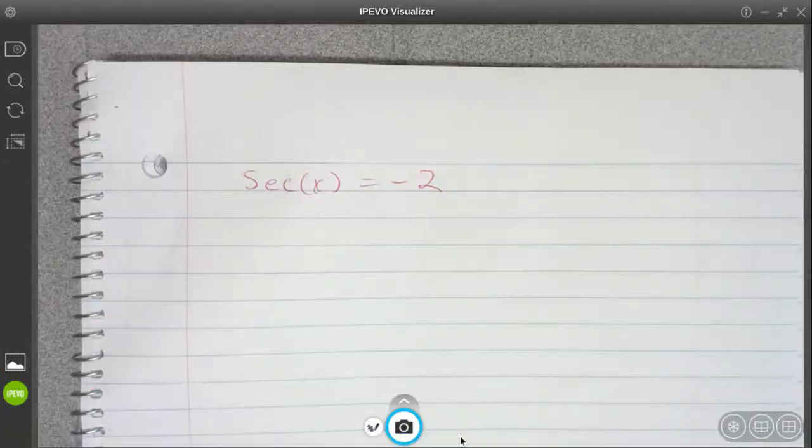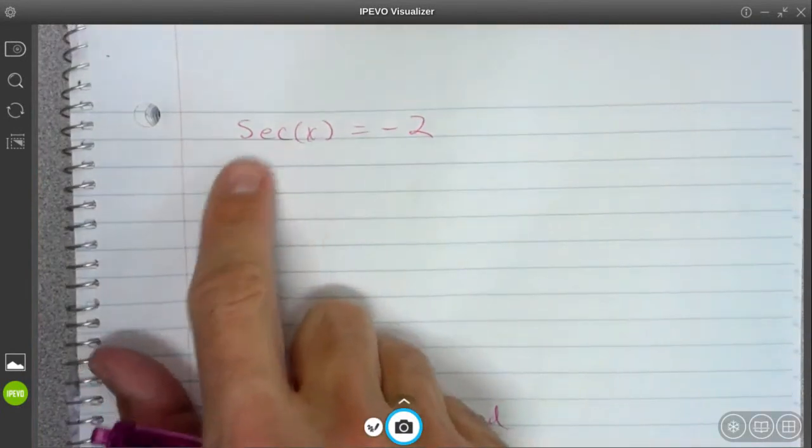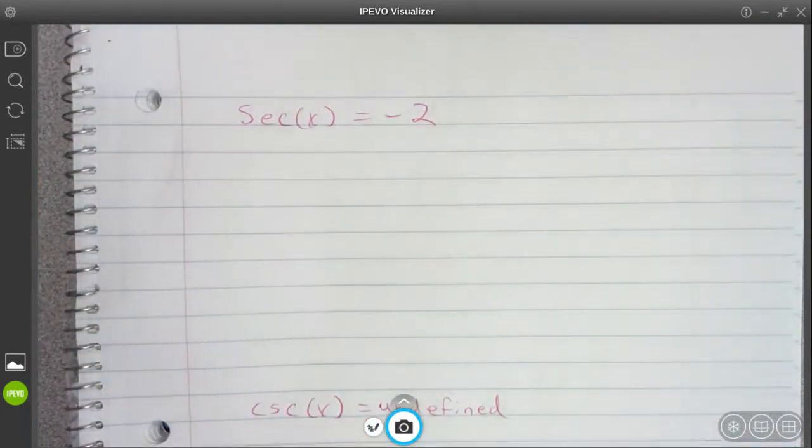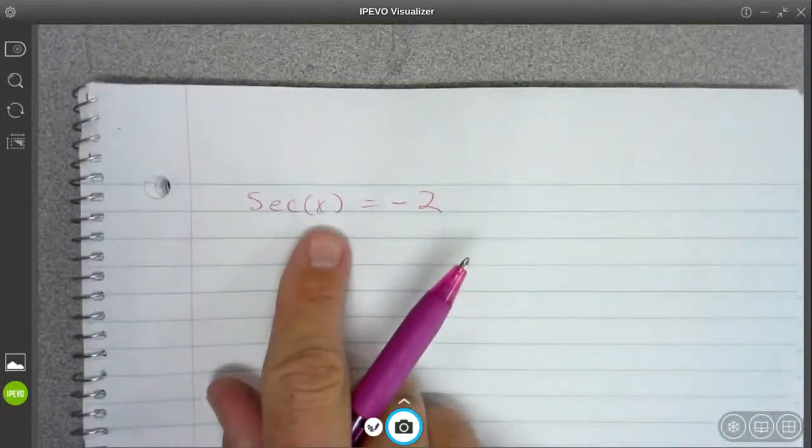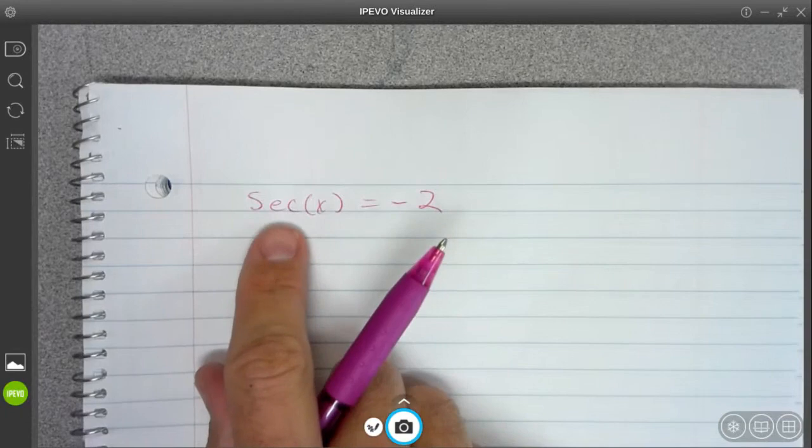Alright, so for the reciprocal trig equations, always get the trig part by itself before you do this step. So secant of x is equal to negative 2, so I'm just going to rewrite this in terms of cosine.